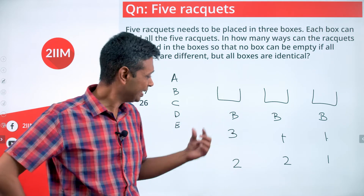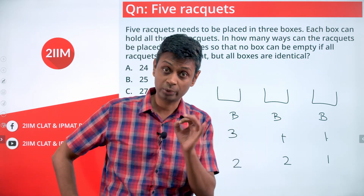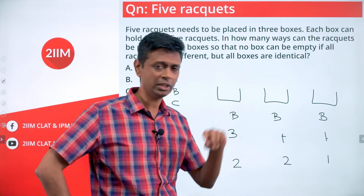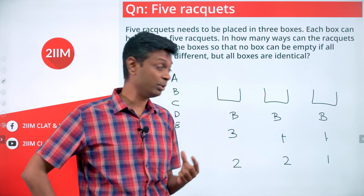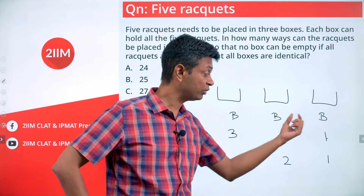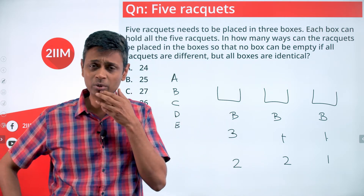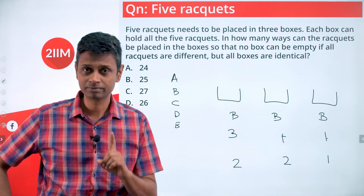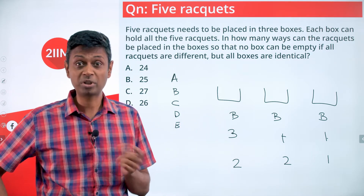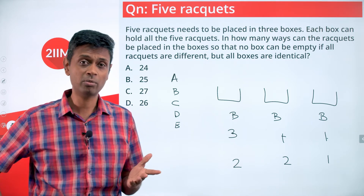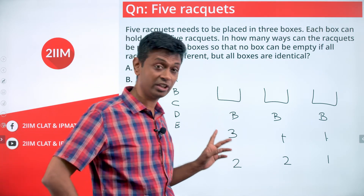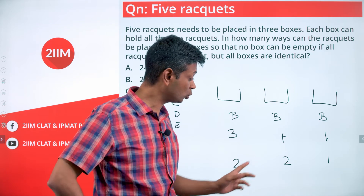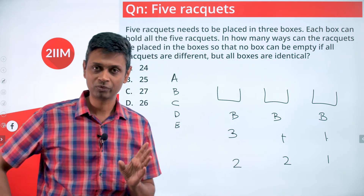For the (3,1,1) case: do we need to worry about which specific box holds the three rackets? No — because the boxes are identical. Whether the three rackets are in the first, second, or third box doesn't matter. Similarly for (2,2,1): the arrangement 2-1-2 or 1-2-2 makes no difference since the boxes are identical.